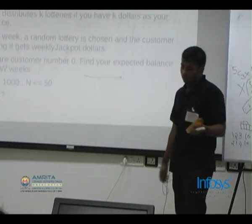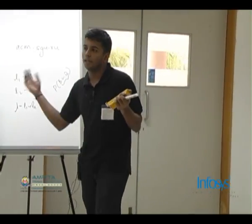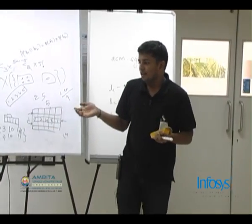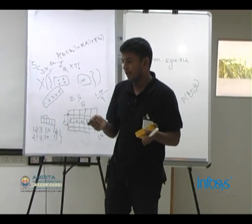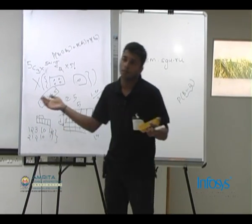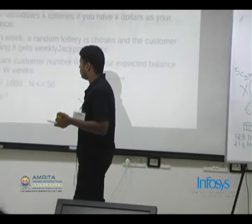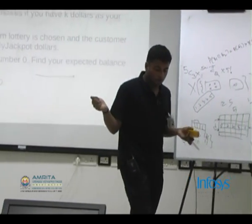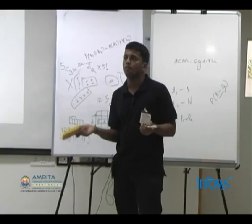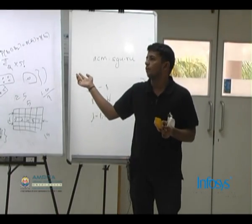You are customer number zero, and you want to know your expected balance after w weeks. As I defined, the expectation is the sum over all x of x times the probability that the random variable equals x. The constraints given are w ≤ 1000 and n ≤ 50. We can do probably 4×10^8 iterations in one second and the time limit is around one second. Can anyone come up with a solution?